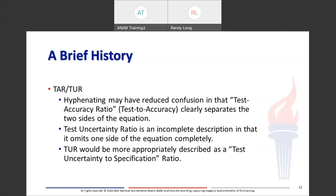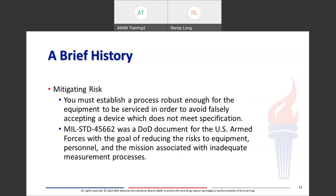TAR and TUR: hyphenating may have reduced the confusion — 'test-accuracy ratio' clearly separates the two sides of the equation. Test uncertainty ratio is an incomplete description in itself in that it omits one side of the equation completely. TUR would be more appropriately described as test uncertainty to specification ratio. The military used to love acronyms, and they still do.